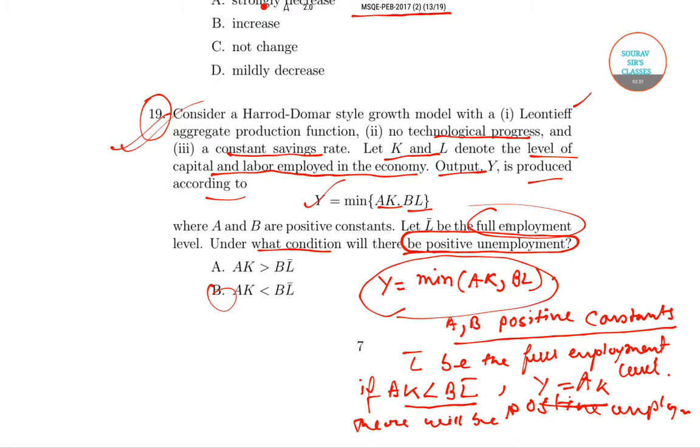It is given that L bar is the full employment level. Under what condition will there be positive unemployment? A and B are positive constants. Now if AK is less than BL, then it is quite obvious that Y will equal AK, the minimum value. So there will be positive unemployment because Y depends on AK. So option B is the right answer.